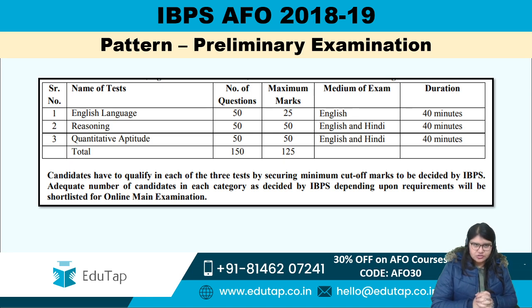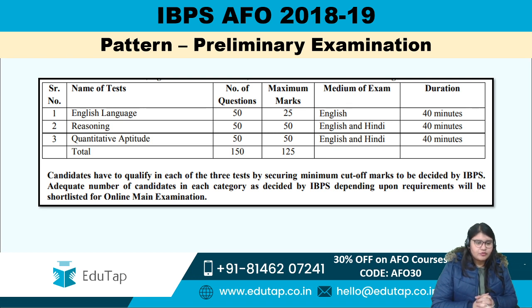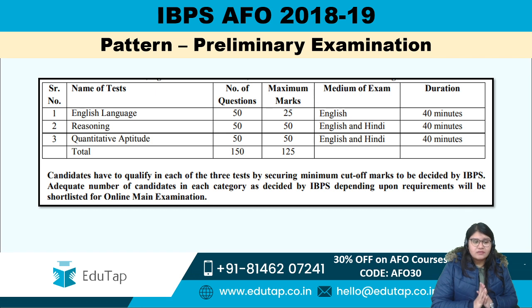There are three sections in your examination tomorrow and the day after. English Language has 50 questions for 25 maximum marks, so for each question you'll be getting half a mark. For Reasoning you have 50 questions and 50 marks. Quantitative Aptitude also has 50 questions and 50 marks. This gives a total of 150 questions and 125 marks.